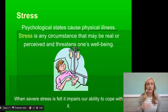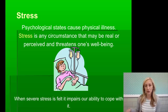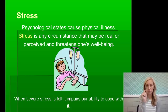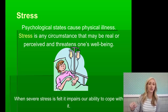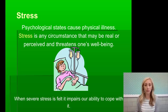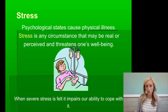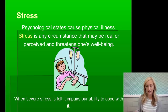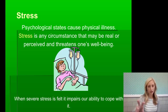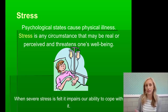What is stress? Psychological states can cause physical illness — your psychological state can actually cause physical illness, and we'll talk about why. Stress is any circumstance, real or perceived, that threatens one's well-being. When severe stress is felt, it impairs our ability to cope with it. That's why stress is such an ugly cycle. Why is it that stress can be so physically debilitating?